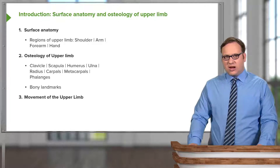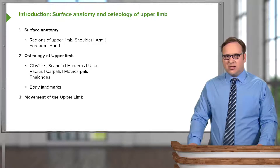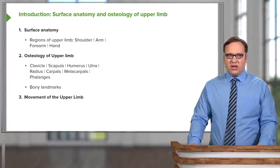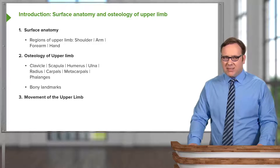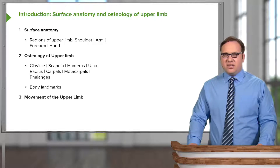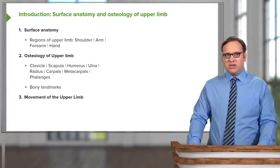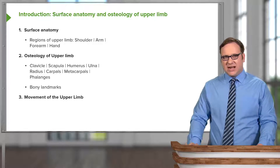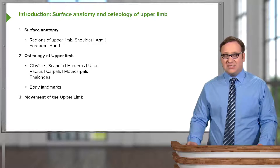We'll look at the clavicle, the scapula, the humerus, ulna, radius, the carpal bones, the metacarpals, and the phalanges. In each of these bony structures, we'll look at specific landmarks, and these are important for muscle attachments.